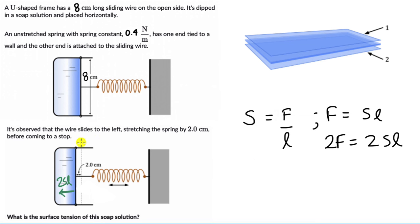Now, the wire comes to a stop after a point of time, right? And anything that comes to a stop, the forces on it must be balanced. So let's figure out what forces are acting on this sliding wire. We already labeled one, that is 2SL acting to the left. There is also a spring. The spring is pulling the wire to the right, and these two forces are equal.